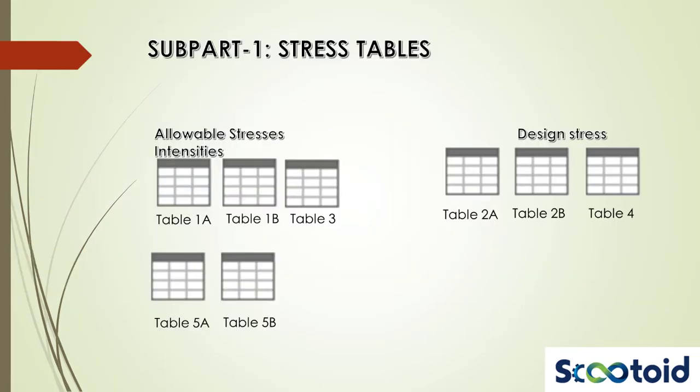Tables 1a, 1b, 3, 5a and 5b cover allowable stresses, while tables 2a, 2b and 4 cover design stress intensities. In this module, we'll review tables 1a and 1b in some detail. This will give you a good idea of how such tables are to be read. You'll then be able to use any of the other tables in your design activity.